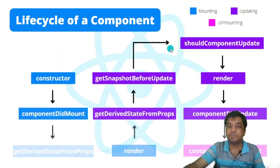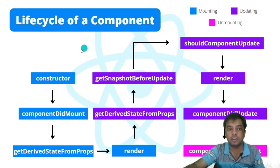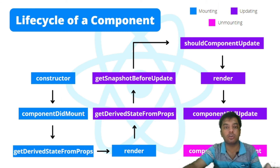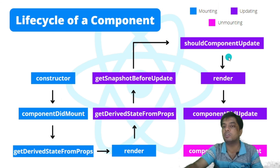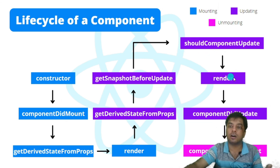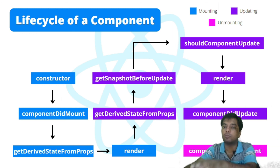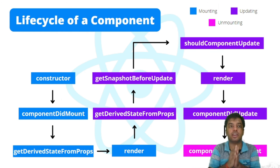To summarize the full lifecycle: the blue methods are mounting, the purple are updating, and the pink is unmounting. First, constructor is called. Then componentDidMount is called once the component is mounted. getDerivedStateFromProps is called before render. On updates, getSnapshotBeforeUpdate is called, then shouldComponentUpdate returns a boolean — if true, render is called again; if false, it is skipped. componentDidUpdate is then called. Finally, componentWillUnmount is called at the very end. This is the entire working of lifecycle methods.